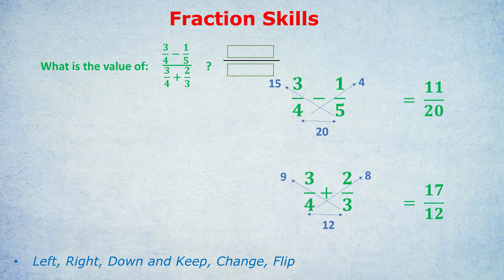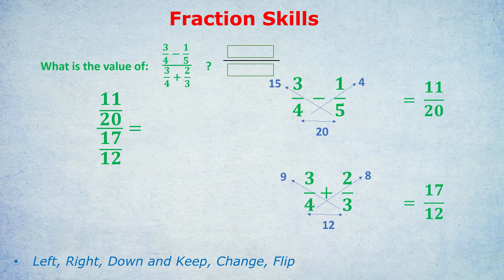If you got that fairly easily, then test out your division practice that we learned. Test out if you can divide 11 20ths, which is the answer at the top, divided by 17 12ths, which was the answer in the denominator. Remember, because 11 20ths was in the top, in the numerator, it means it's being divided by 17 12ths in the denominator. So what does 11 20ths divided by 17 12ths become?